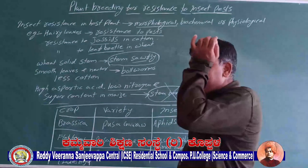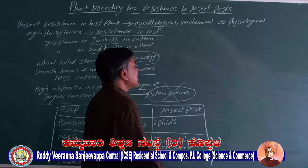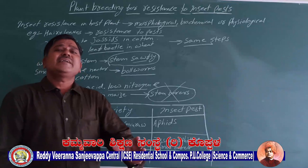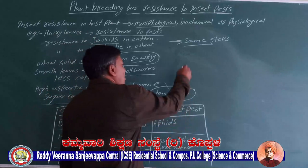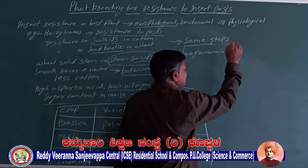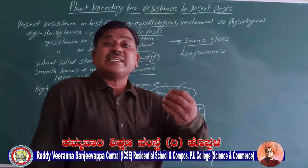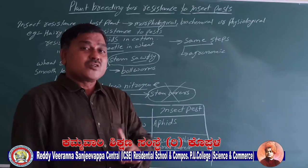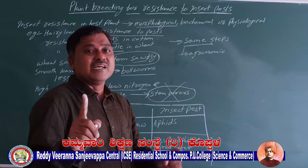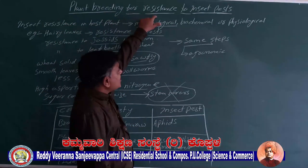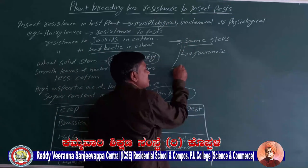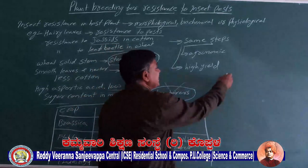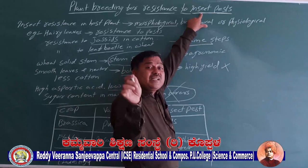What method do we use in plant breeding? Same steps are followed. First, identify the special character in plants. In plant breeding for insect pest resistance, the first character to consider is high yield of the crop, and the second character is that the plant should be resistant to insects.